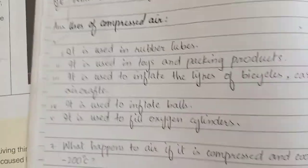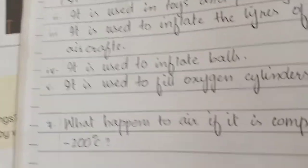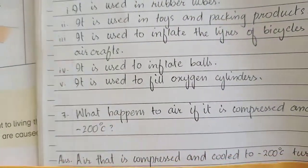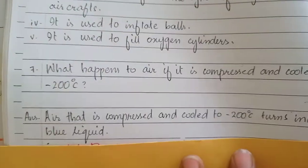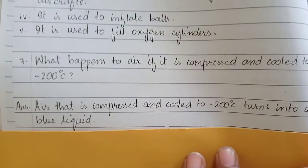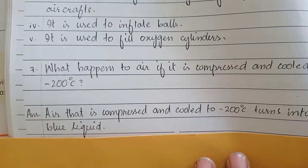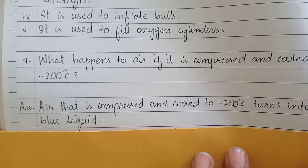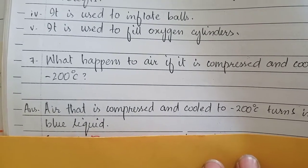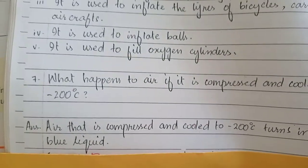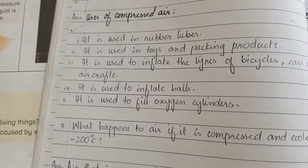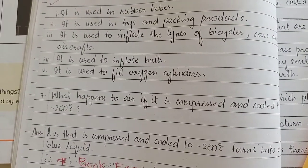Question number 4: What happens to air if it is compressed and cooled to minus 200 degrees centigrade? Air that is compressed and cooled to minus 200 degrees centigrade turns into a blue liquid.